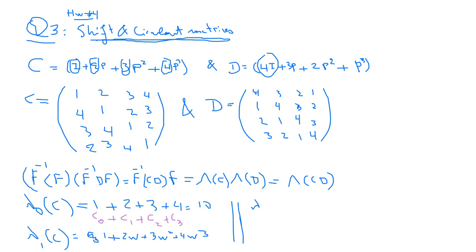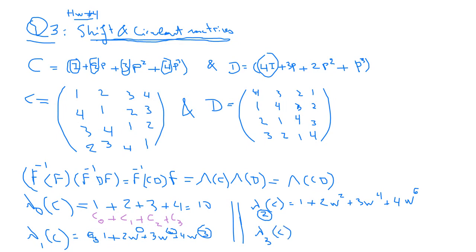Lambda 2 of C would be C0 plus C1·W squared plus C2·W to the 4th plus C3·W to the 6th — that is, 1 plus 2W squared plus 3W⁴ plus 4W⁶. The last eigenvalue, since it is a 4×4 matrix, is lambda 3 of C equal to 1 plus 2W cubed plus 3W⁶ plus 4W⁹.